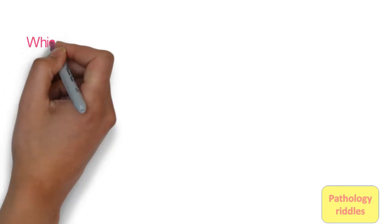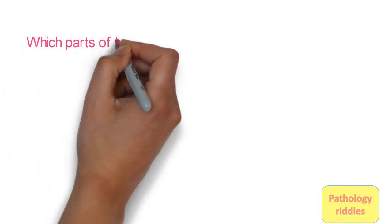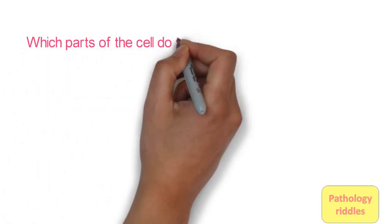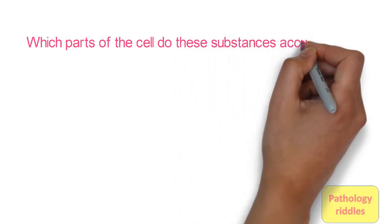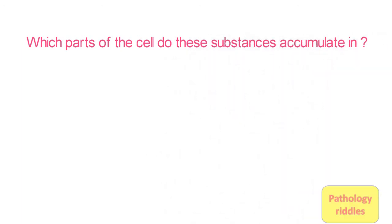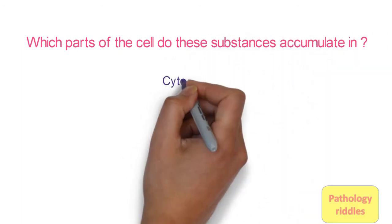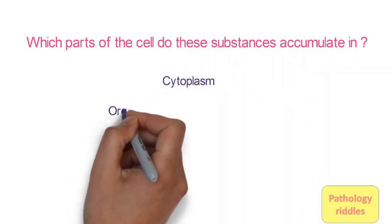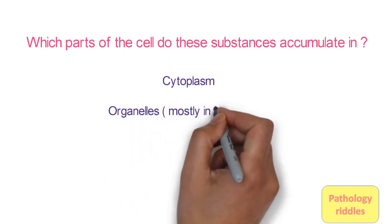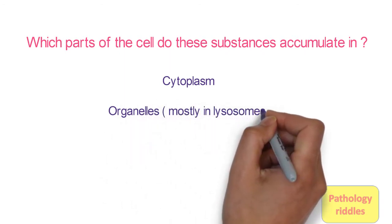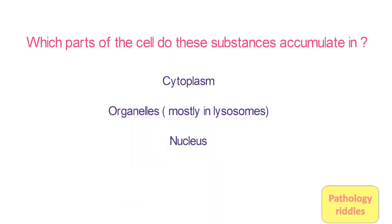Question 2: Which part of the cell do these substances accumulate in? The answer is: cytoplasm, organelles (mostly lysosomes), and nucleus.